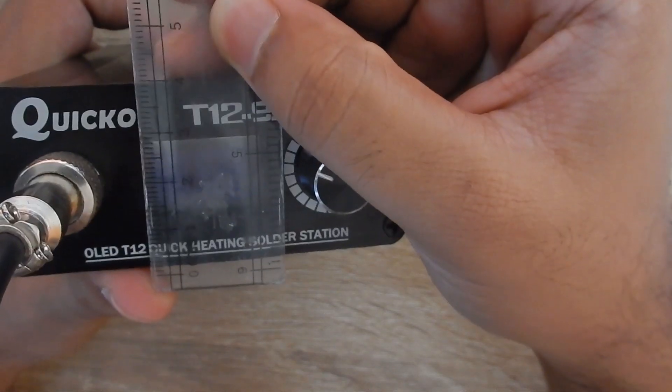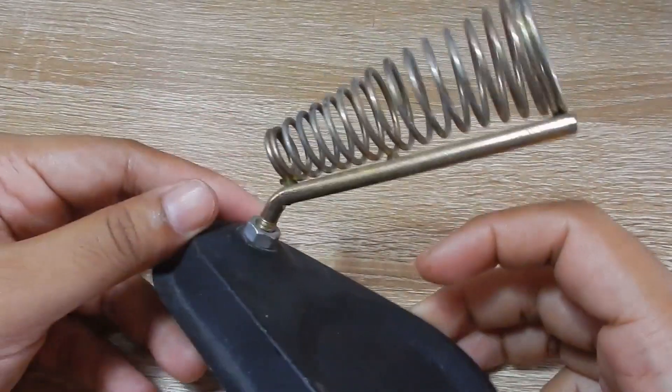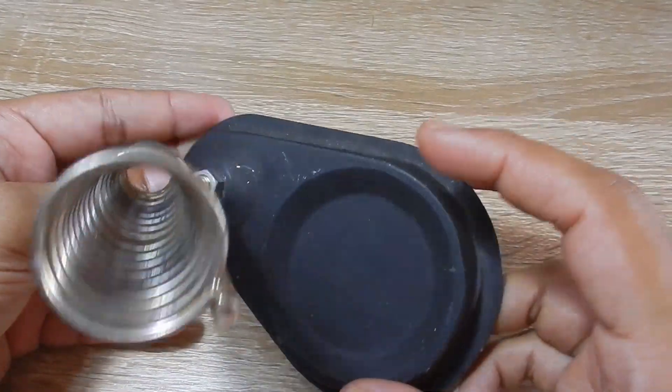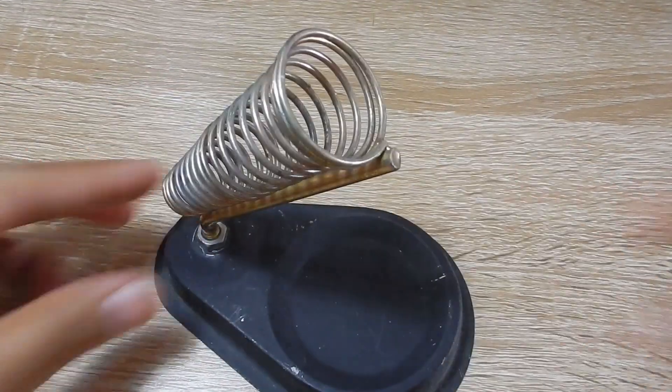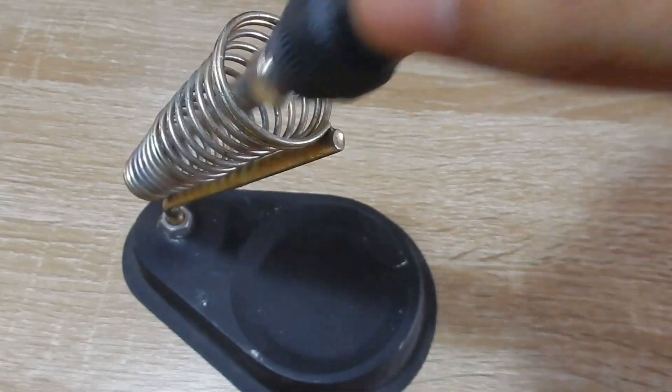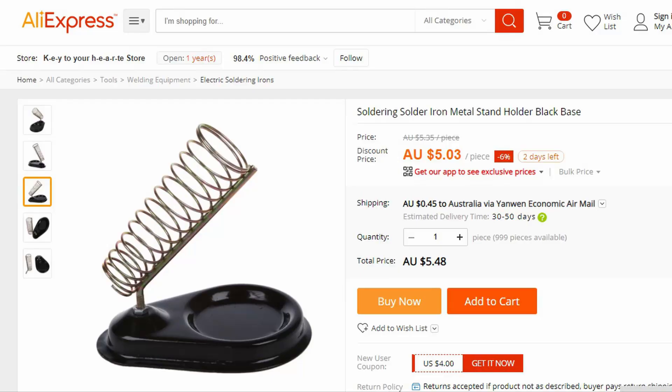One downside is that the iron does not contain any stand inside the box, so you need to purchase one separately. I have purchased a metal stand. It's pretty cheap and costs around five dollars including shipping.